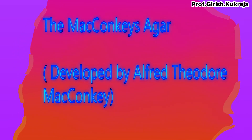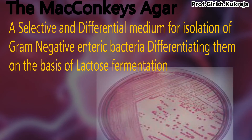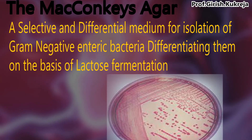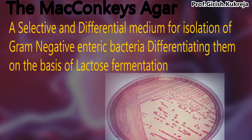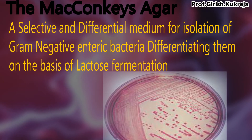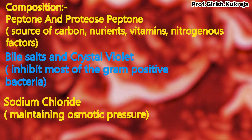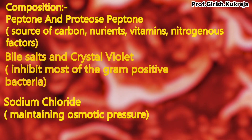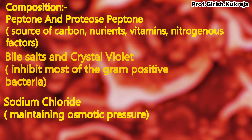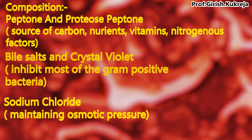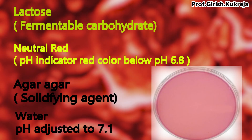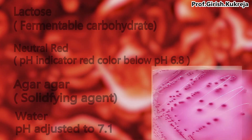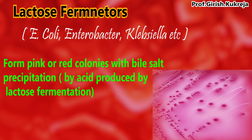MacConkey agar is a selective and differential medium for isolation of gram-negative enteric bacteria, differentiating them on the basis of lactose fermentation. It is selective due to bile salts and crystal violet, which inhibit most gram-positive bacteria, and differential due to lactose and neutral red.